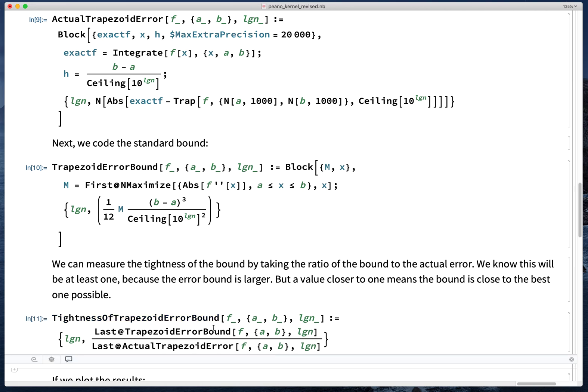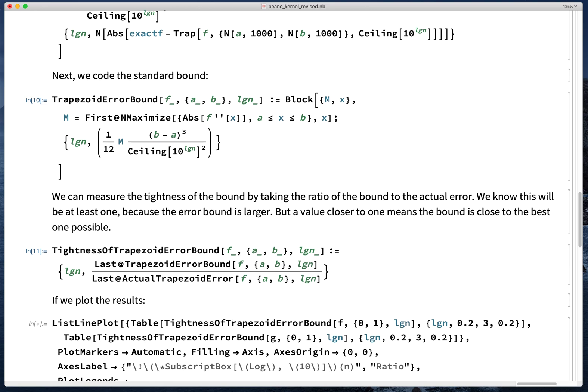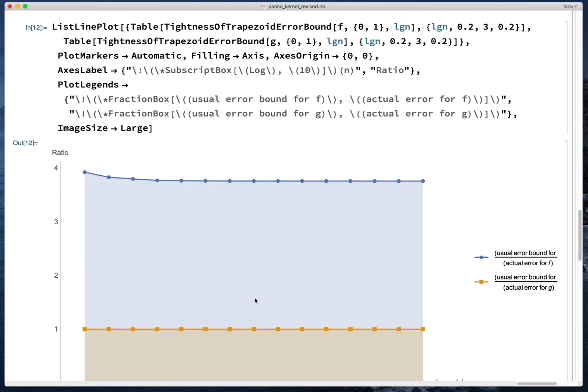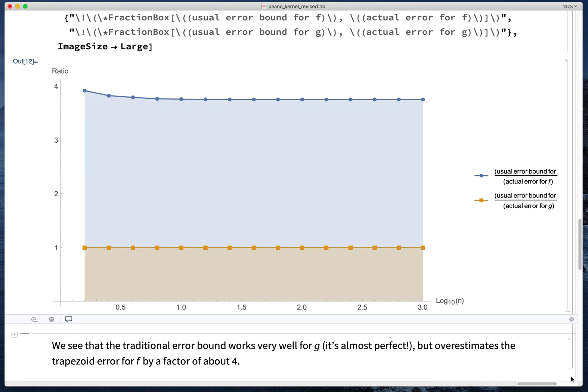So now we're going to plot the results. All right. So what we see here is that for the function f with the variable second derivative, the traditional bound overestimates the error by a factor that's between 3 and 4 and pretty close to 4.